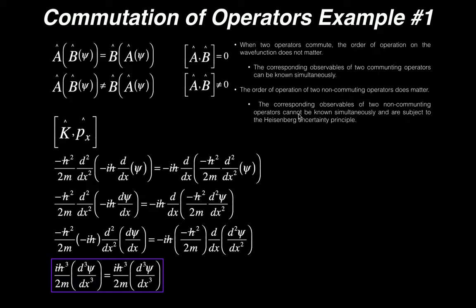We have a way to show whether or not two operators commute. We have Â and B̂ as our two operators. In bracket notation, if we have [Â, B̂] = 0, this denotes that the two operators commute. That means we can know the observables of both operators simultaneously. Mathematically, it means that if I have a wave function ξ, I can operate first with B̂ and then with Â, or first with Â and then with B̂, and get the same result. The order does not matter.